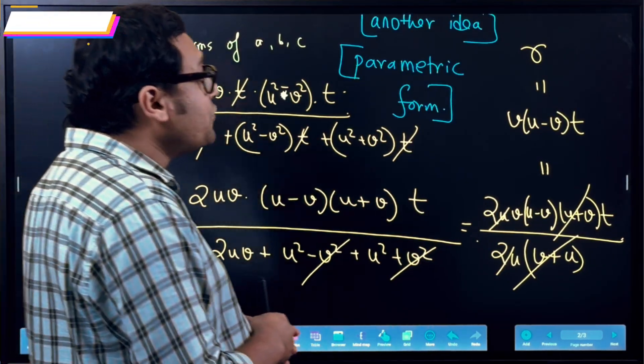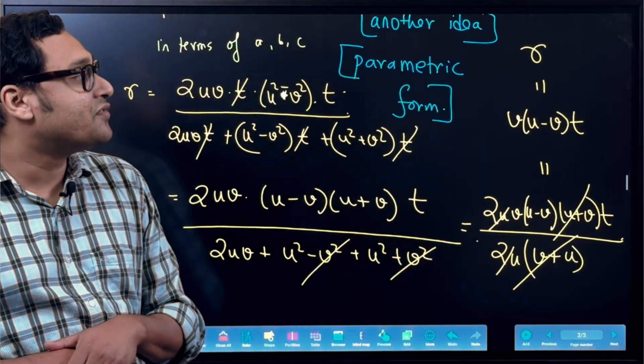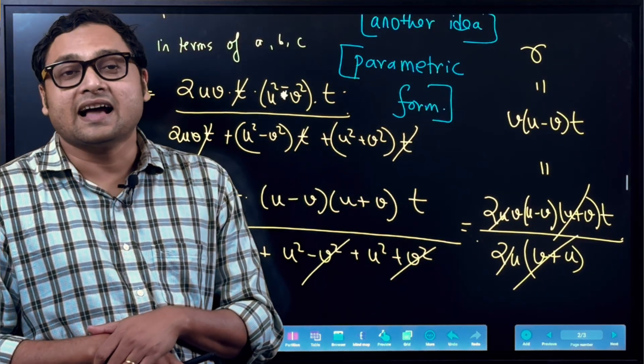So what we have essentially proved is that R is a product of integers. Therefore, R has to be an integer.